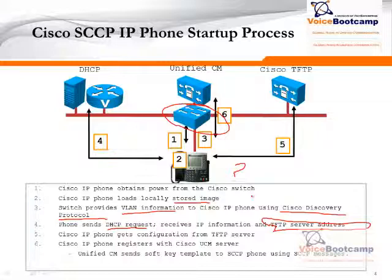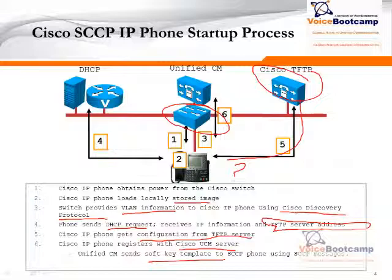The configuration file contains a list of call managers that the phone can register to. The configuration is received from TFTP, and the phone will register with the call manager according to that file. The call manager will then send the soft key template to the phone. This is the normal process of how a phone starts up and registers to the call manager.